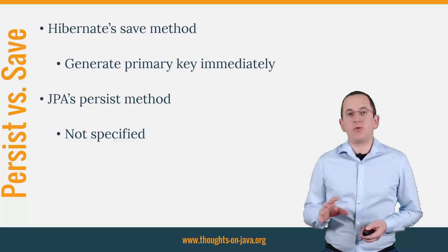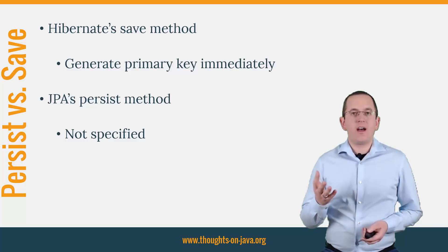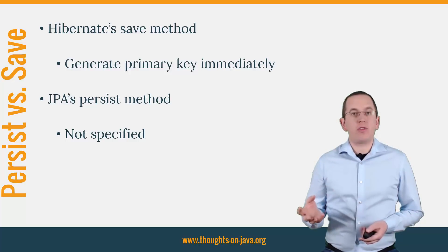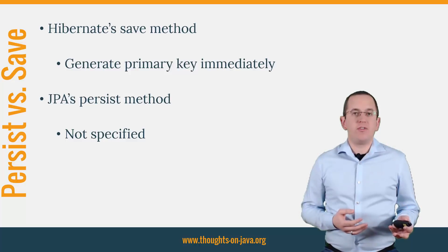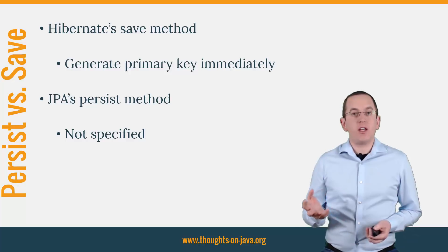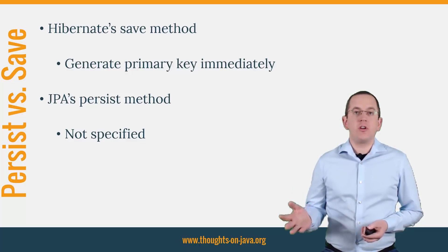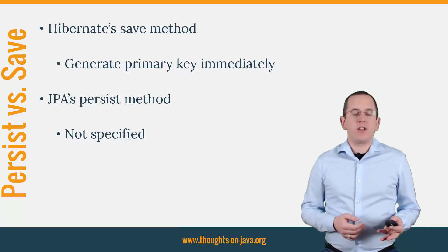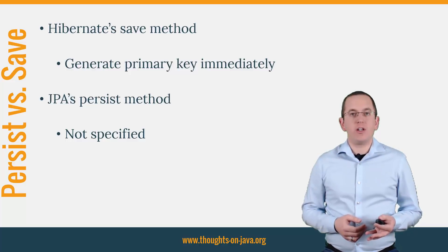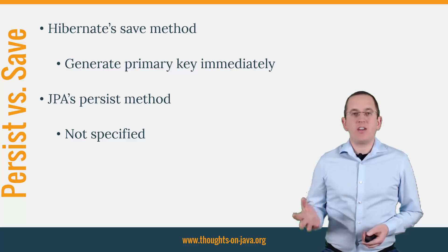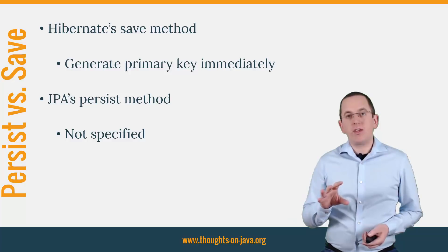In most cases, it doesn't make any difference if you call the save or persist method. Hibernate uses the name of the entity class and the primary key value to store the entity in the first level cache, and therefore needs a primary key value when it executes the persist method. In almost all situations, Hibernate generates the primary key value immediately and triggers an SQL statement if necessary when you call the persist or save method. But that is not the case if you use the identity strategy and try to persist an entity without an active transaction or with flush mode manual. If you call the persist method in one of these situations, Hibernate delays the execution of the SQL insert statement and creates a temporary primary key value. But if you call the save method, Hibernate performs the SQL insert statement immediately and retrieves the primary key value from the database.